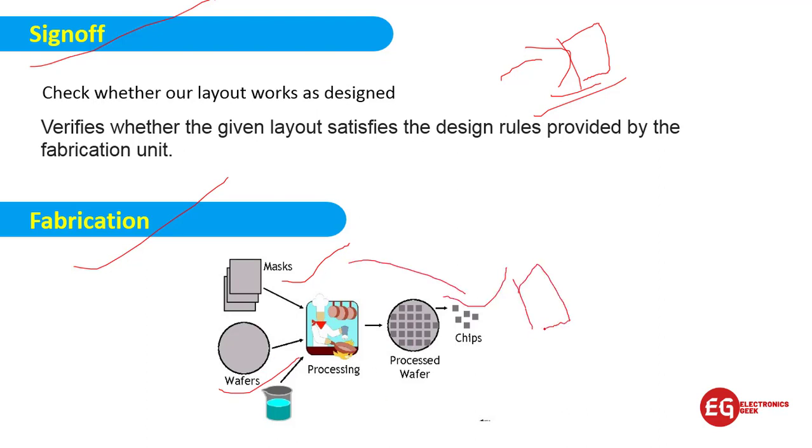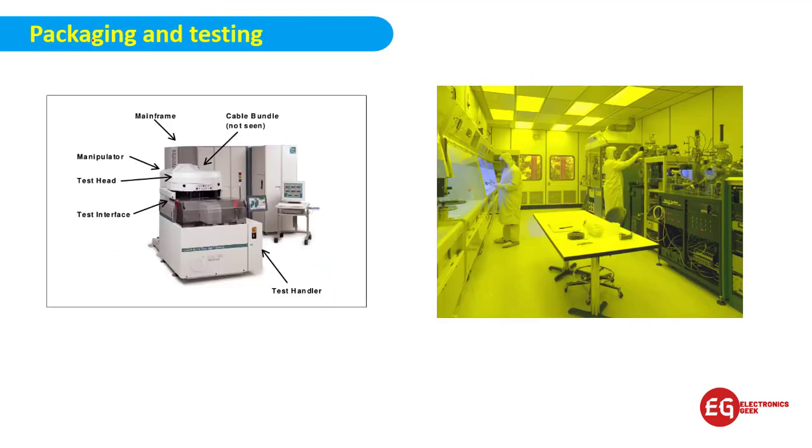At last we will fabricate the IC. For fabricating IC, we require the mask buffer. For doing this, we will fabricate the IC and we will be getting the chips. The next one is packaging and testing.